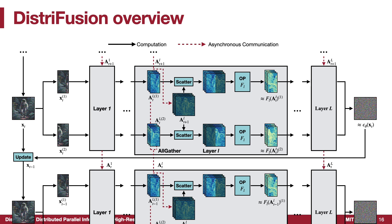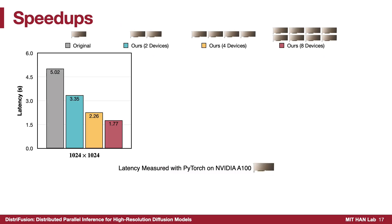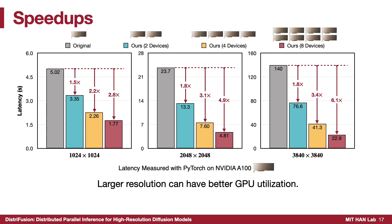Please refer to our paper for more details. Here we show the efficiency results of DistriFusion. At the original 1K resolution, we achieved 1.5 and 2.8 times speedups on 2 and 8 A100s respectively. This is because the devices are underutilized. To maximize device usage, we further scale the resolution to 2K and 4K. Specifically for 4K images, DistriFusion reduces the latency by 6 times with 8 A100s.